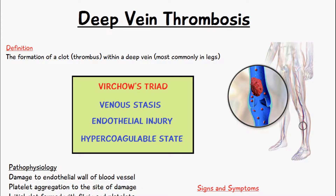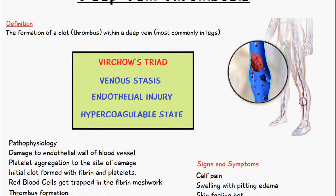The main factors which favor the formation of a thrombus or a clot are known as Virchow's triad — three factors. The first is venous stasis, the slowing down of venous blood, which can occur in spinal cord injuries or prolonged bed rest. The second is endothelial injury, damage to the blood vessel wall, which can happen in surgery or trauma. The third is a hypercoagulable state, which can also occur in surgery and trauma.